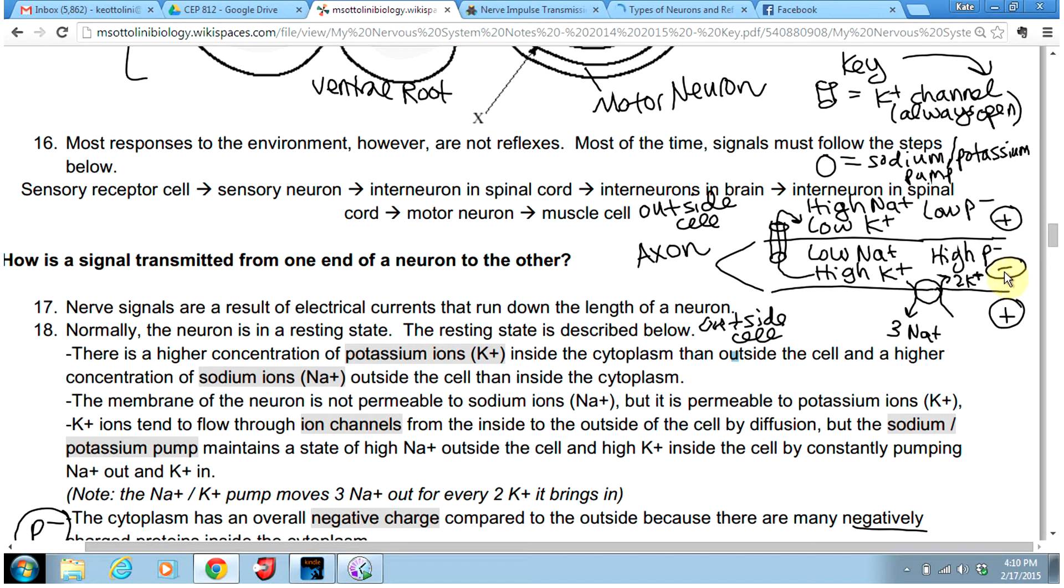Notice that I've indicated the inside of the cell is negative compared to the outside, which is positive on the right hand side here. So I'm just giving the relative charges of the outside and the inside of the cell. I wrote high P minus here to indicate that we have a lot of negatively charged proteins inside the cell compared to a low amount of negatively charged proteins outside the cell.